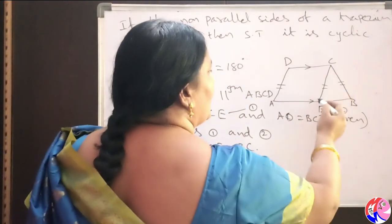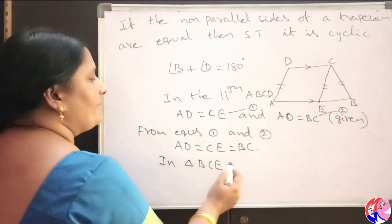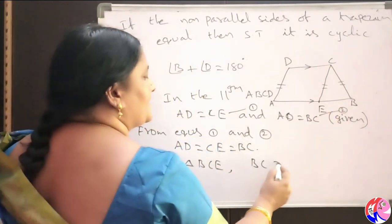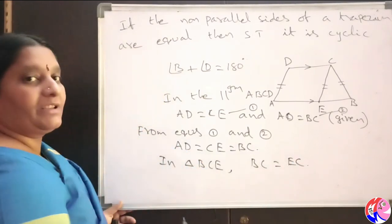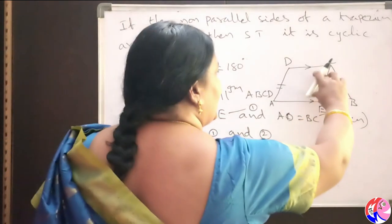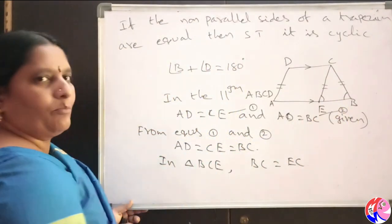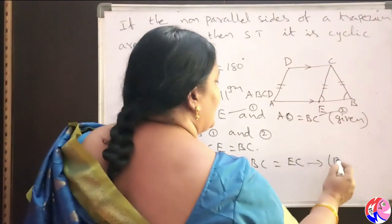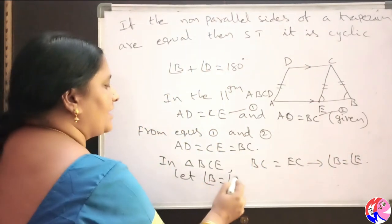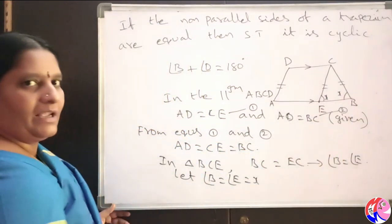Consider triangle BCE. In triangle BCE, the two sides EC and BC are equal, so BC equals EC. We know that in a triangle, if two sides are equal, the angles opposite to them are also equal. EC's opposite angle is angle B and BC's opposite angle is angle E — both are equal. So we can write angle B equals angle E. Let angle B equals angle E equal to X.